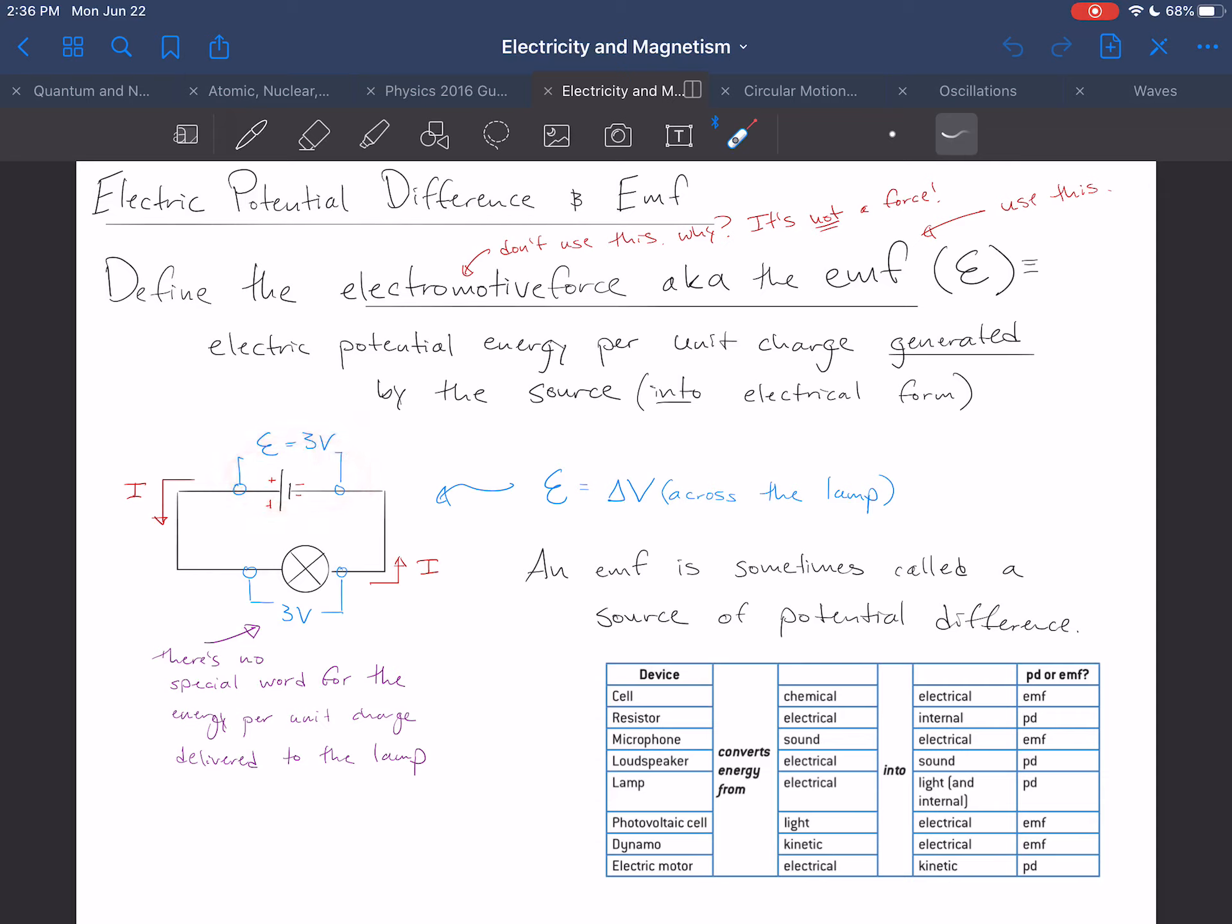EMFs are the sources of the energy. So, we'd describe this battery as having an EMF of three volts, but this lamp does not have an EMF of three volts. It does have a potential difference of three volts equal to the EMF generated in this lamp. So, how do we say that in symbols? We say that EMF is equal to the potential difference across the lamp.